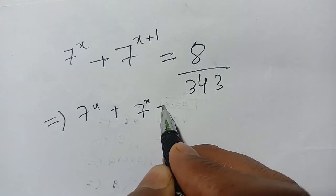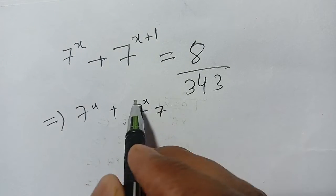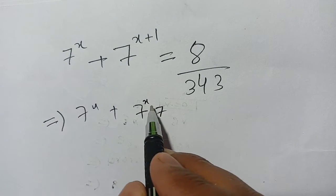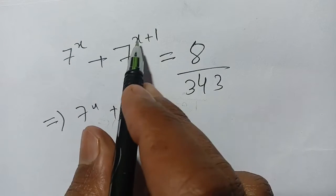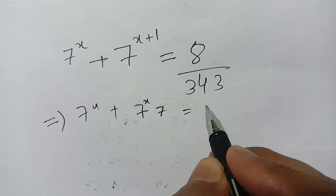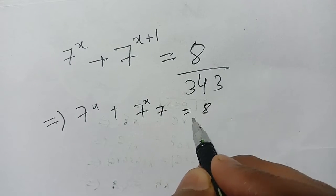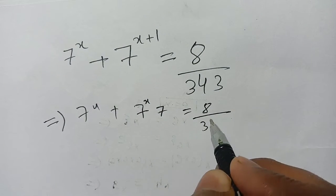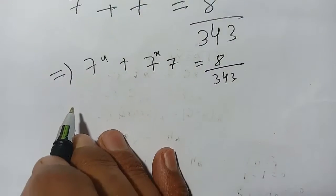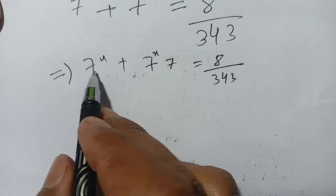Now we have 7 power x plus 7 power x plus 1. The second term can be written as 7 power x into 7, because when the base is the same, powers are added, giving 7 power x plus 1. This is equal to 8 divided by 343.